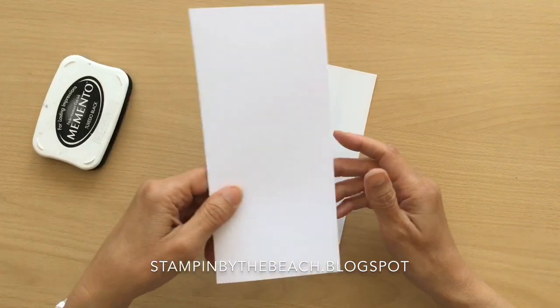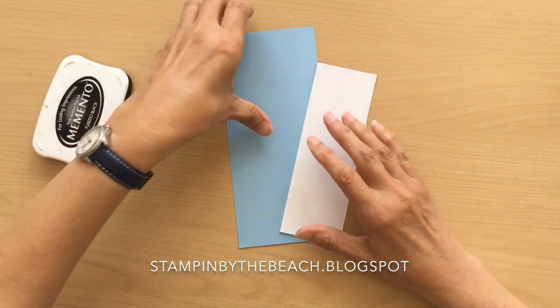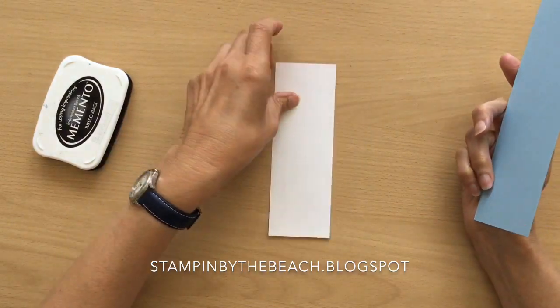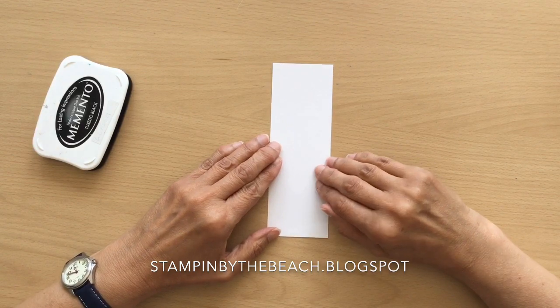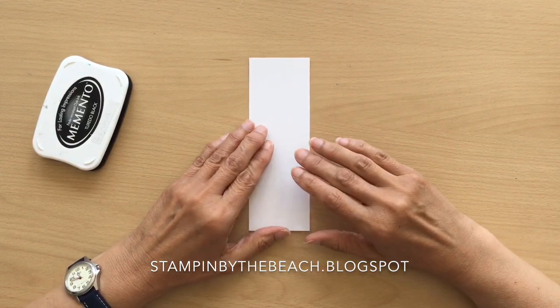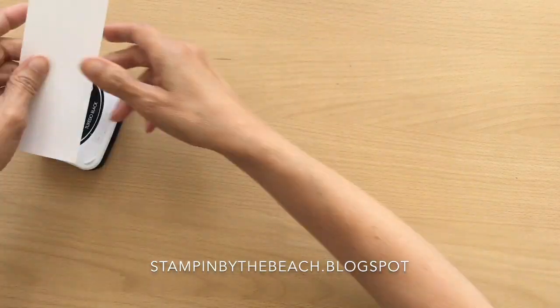I'm using a DL size card here and I've got Balmy Blue and some glossy cardstock. The glossy cardstock was Stampin' Up's but they don't do it anymore, so you can get it from other places.